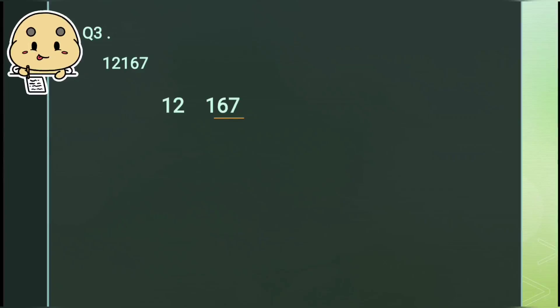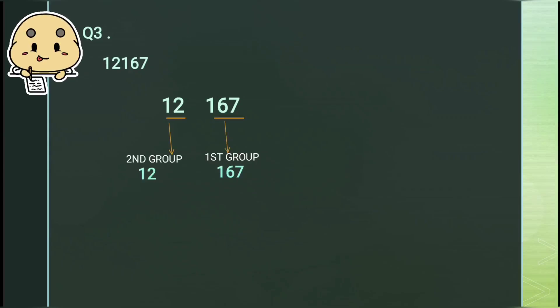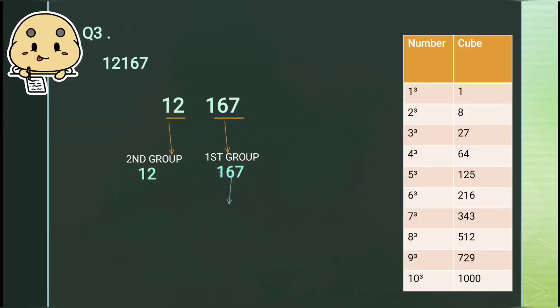Now let's take one more number: 12167. Again we will start making groups. On grouping we have got 2 groups — in the first group we have 167, and in the second group we have 12. We look at the ones digit of the first group, which gives us the ones digit of the cube root. Here we have 7, so the ones digit of the cube root will be 3.